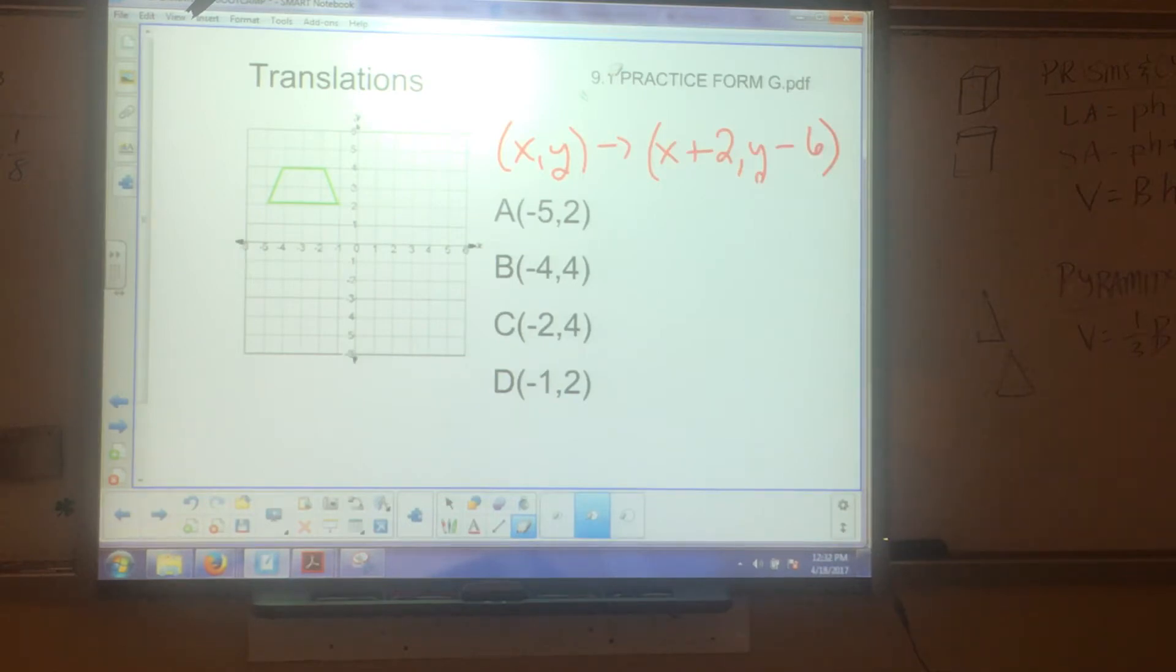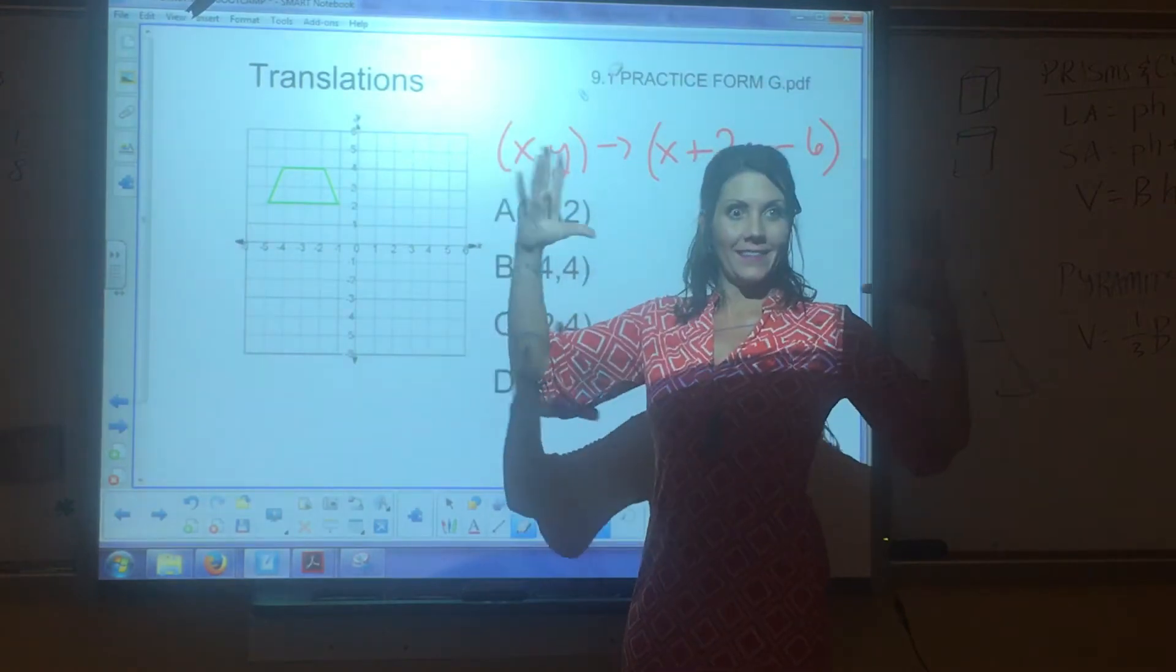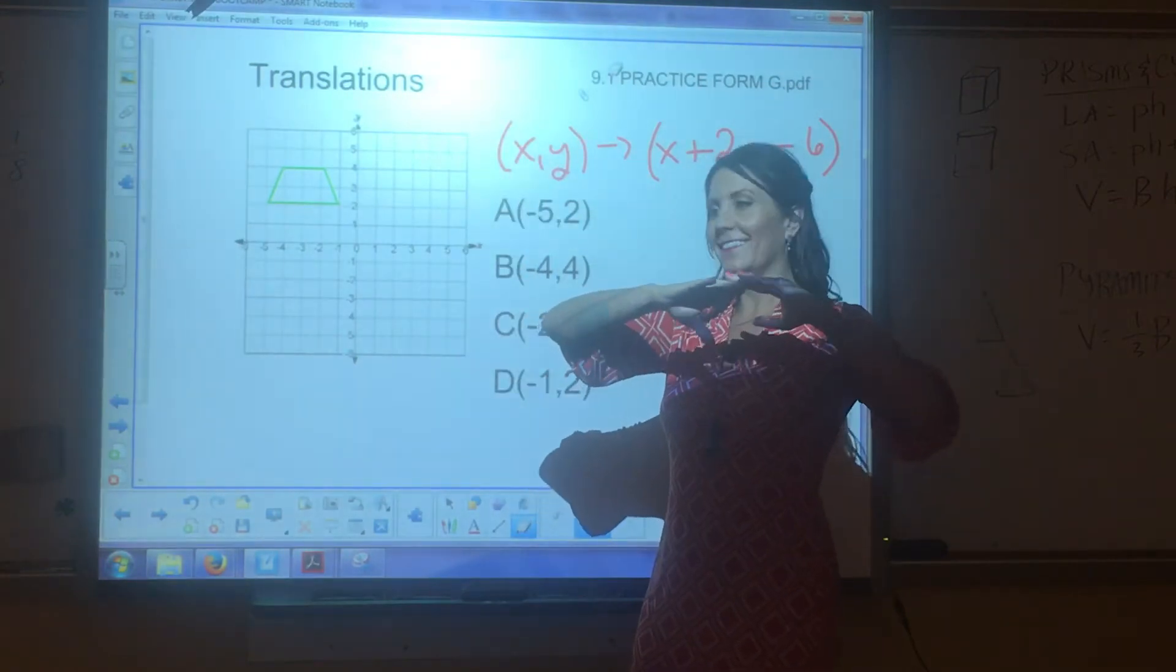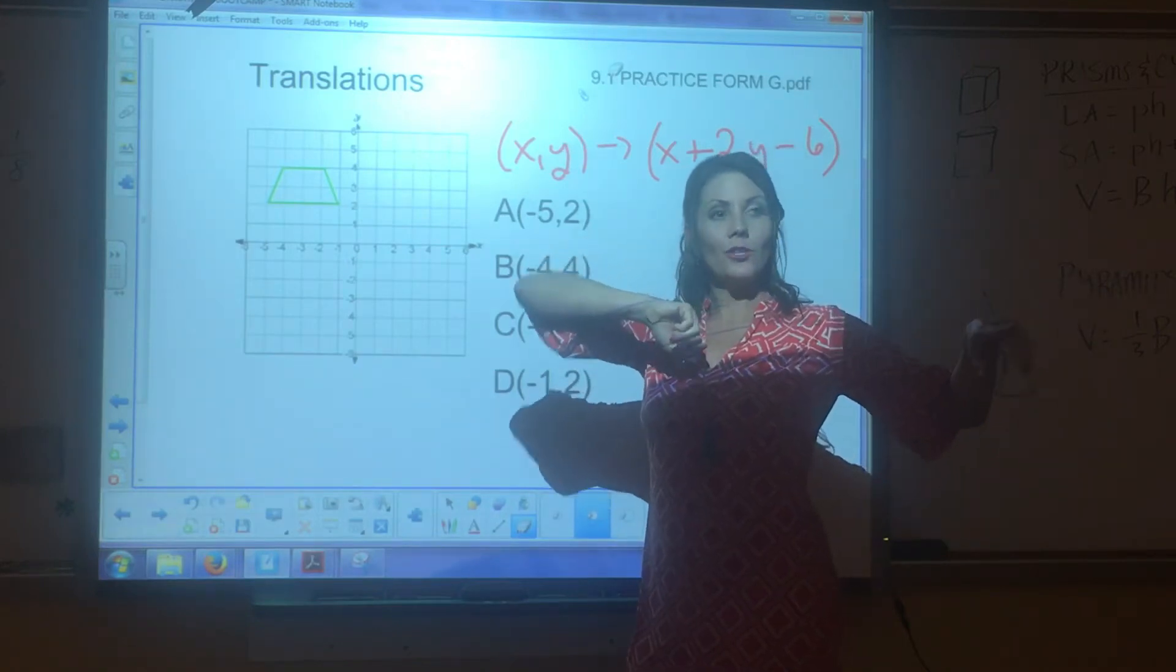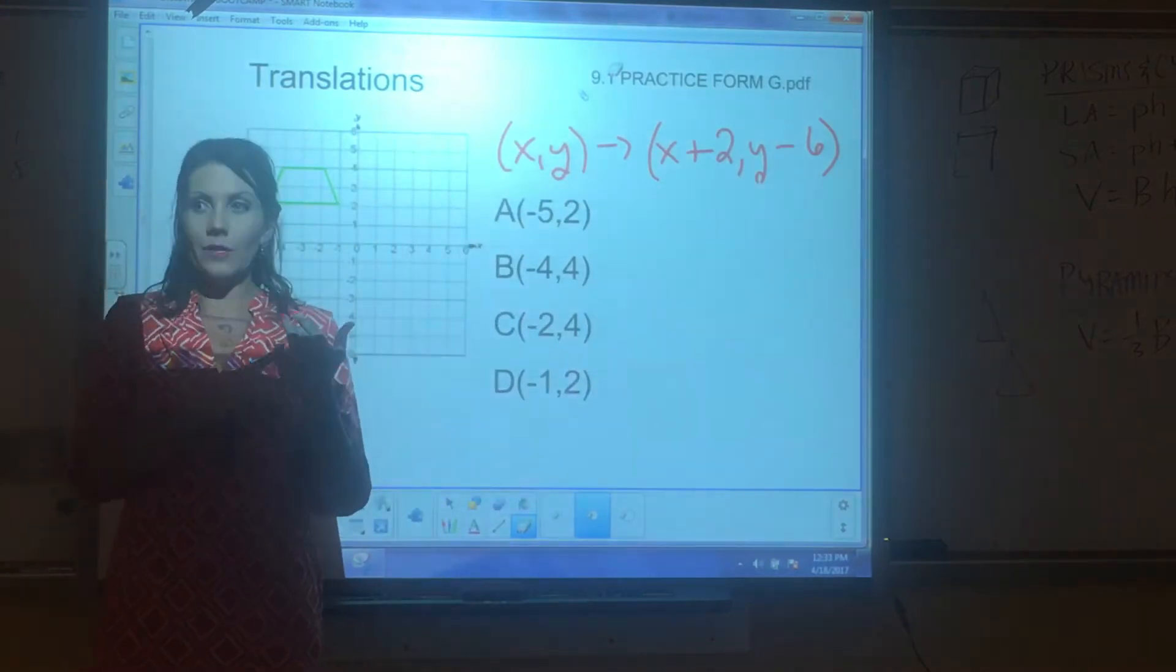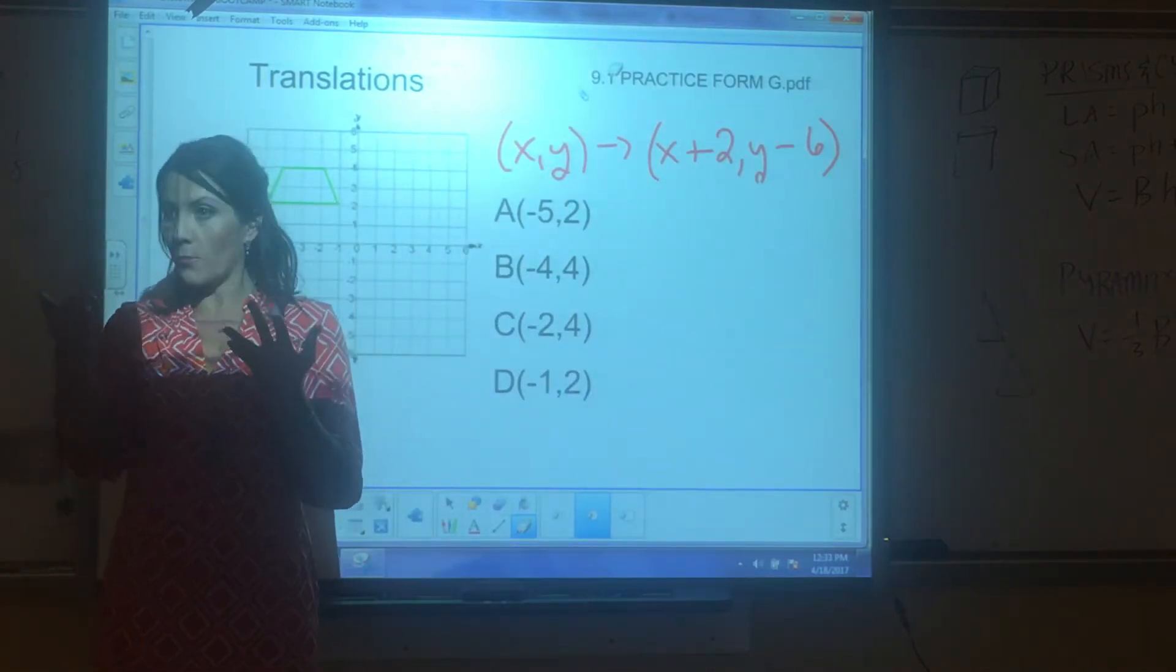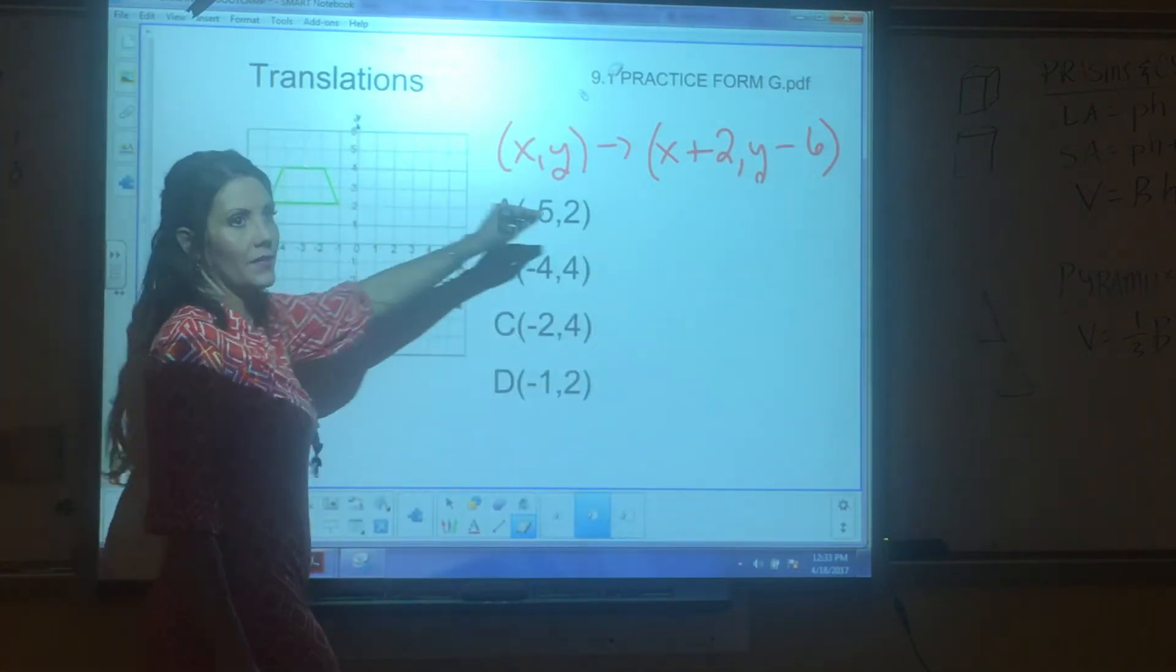They keep the shape the same size. Same size, same shape. Alright, the only one that does not do that is what? Dilation. Good. So dilation, we have enlargements or reductions. Now, dilations do create similar figures, meaning that the angles are congruent, sides are proportionate. Perfect. And we'll explore that later. Alright, I know you guys plotted this. This is pretty easy. This is a translation.